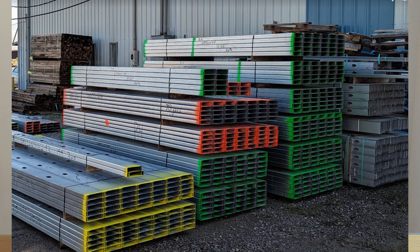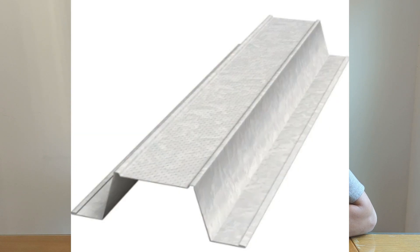Metal studs will often come from the factory labeled with a color spray painted on them at the end of each stud. That refers to their gauge and their mill thickness — the thickness of the metal used to form the stud. The most common one is 18 gauge, which is yellow at 43 mills. Another commonly used gauge is 16 gauge, which is green.